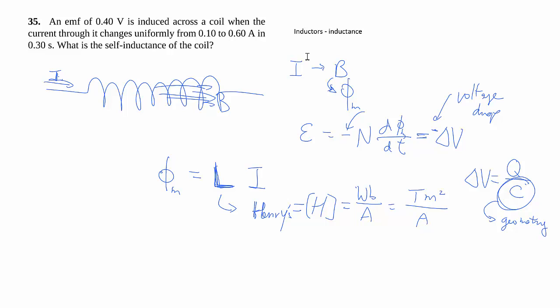This is kind of a similar idea that somehow we know that the flux through that thing should increase as the current increases. And so if we capture every other parameter that's related to geometry that doesn't change with current, we can then make the problem a little bit easier.